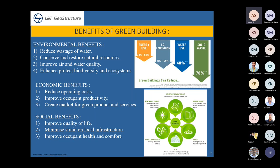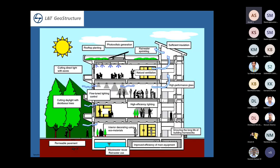Here is a typical green building. You can see rooftop planting, which keeps the building below cool. Similar to spraying water on a terrace in summer — the water evaporates and cools the room underneath. Rooftop plants work on the same concept; you don't need to regularly spray water since it stays in the roots of the plants.